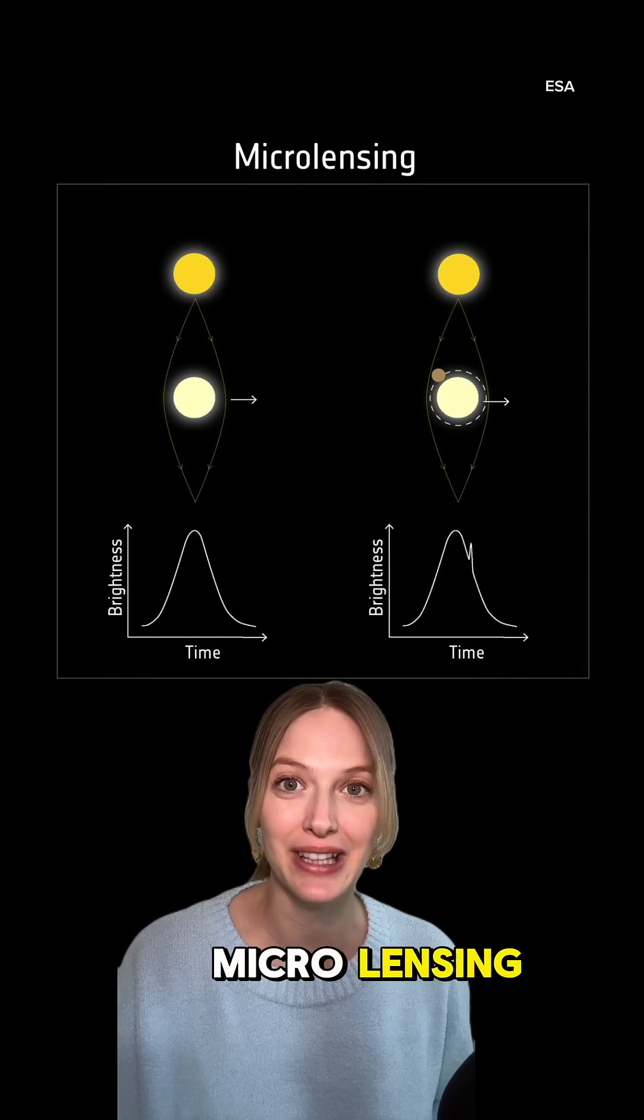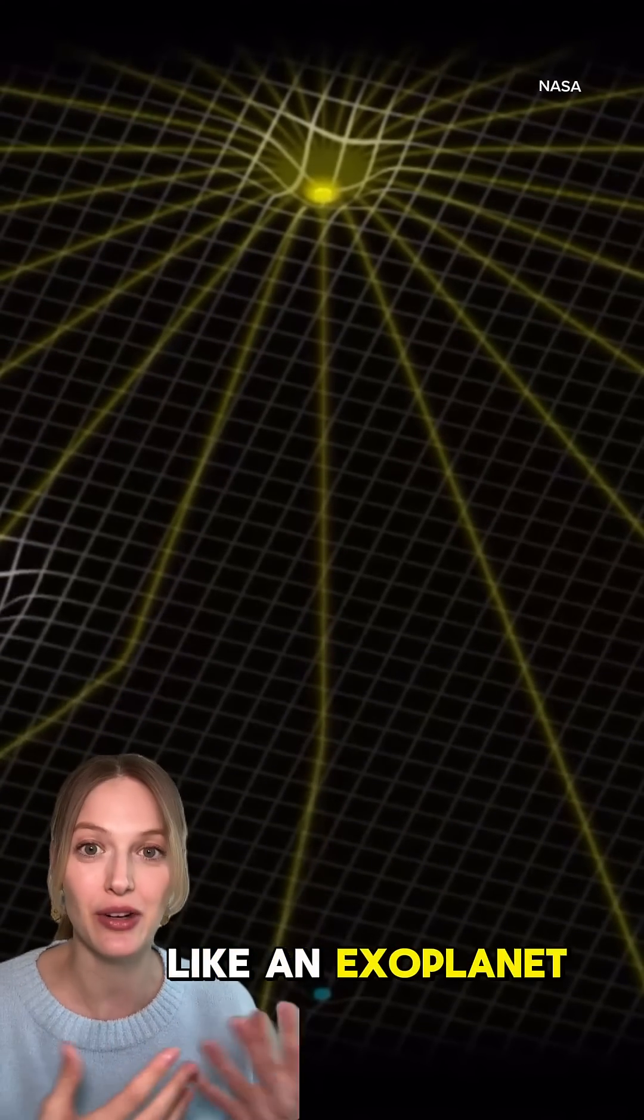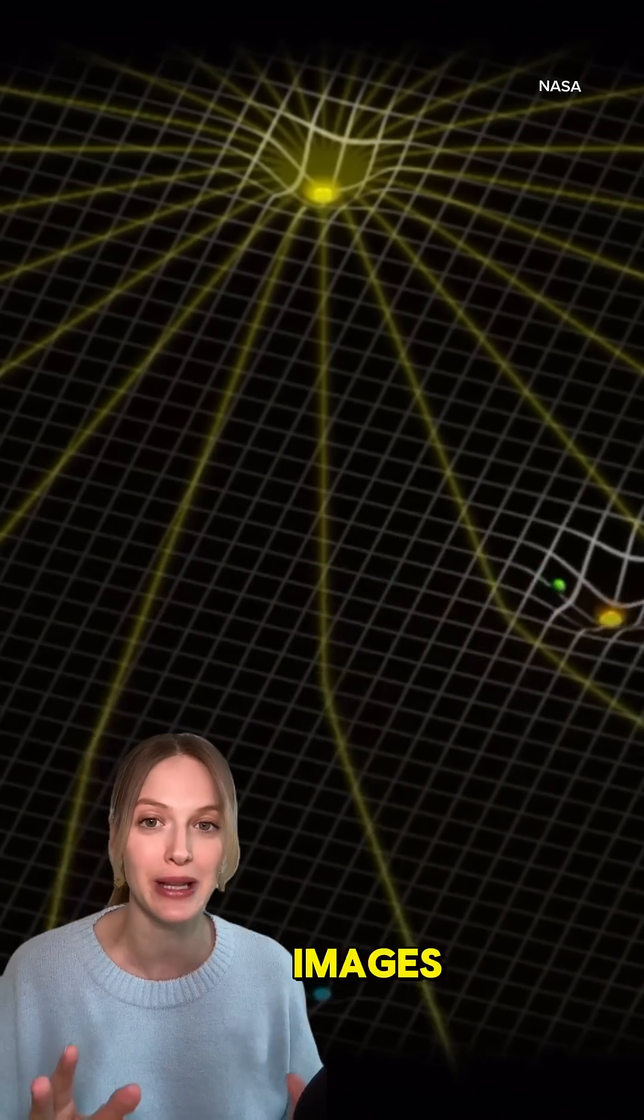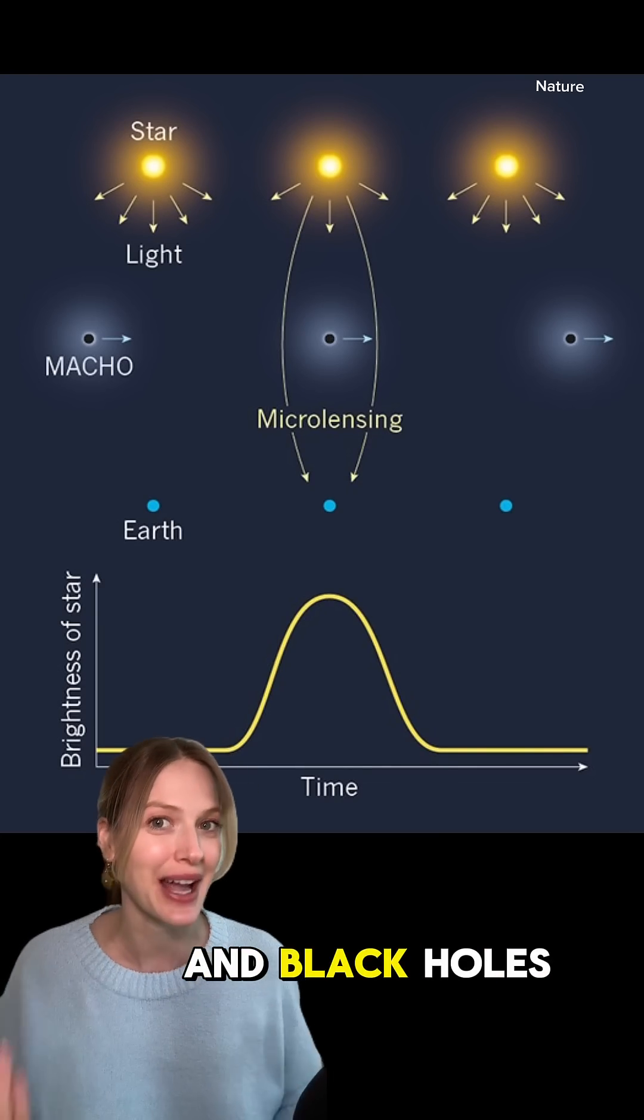Then you have microlensing. This occurs when a smaller foreground object, like an exoplanet or star, briefly magnifies a distant star or quasar without creating multiple images, making it useful for detecting exoplanets and black holes.